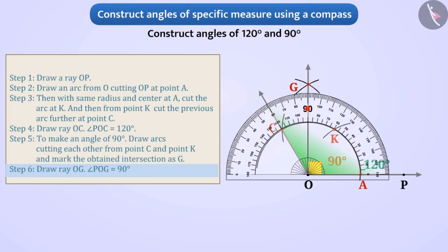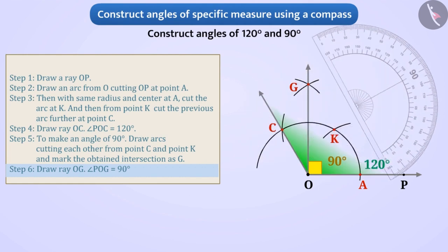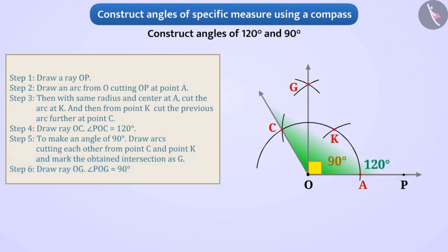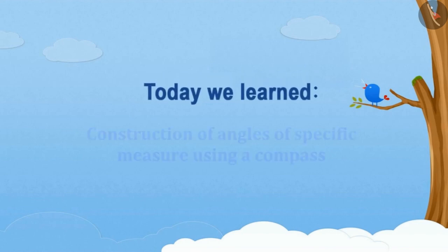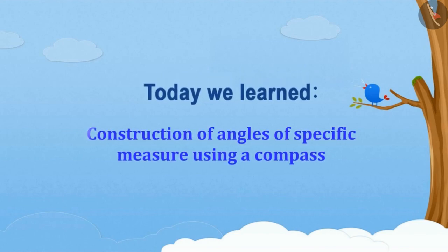We can verify this using the protractor. Now try to make an angle of 150 degrees using this method yourself. Today we learnt how to construct angles of specific measure using a compass. In the next video, we will see examples related to making angles of given measurement.